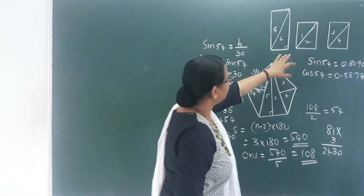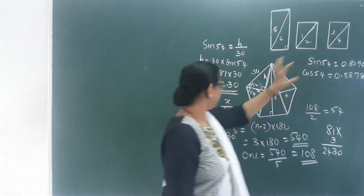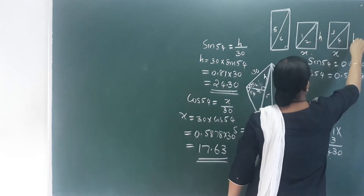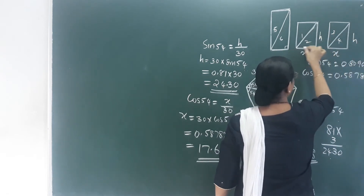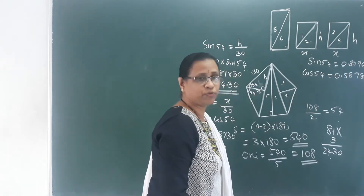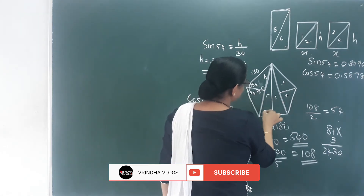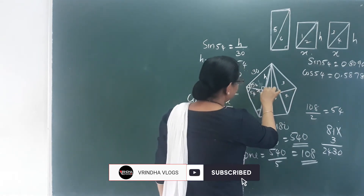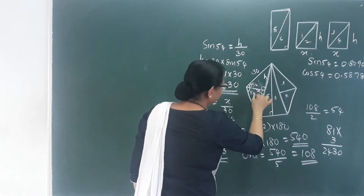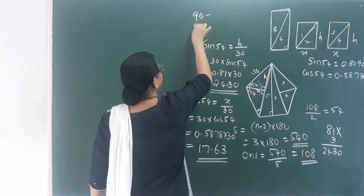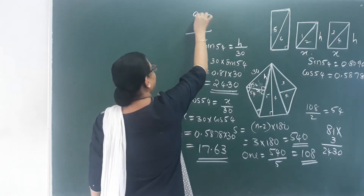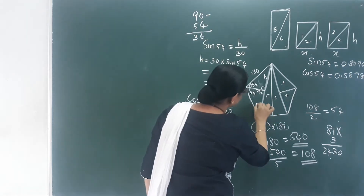So x is approximately 17.63. That gives us the length and breadth of the first rectangle. For the second rectangle, the angle at the pentagon corner is 108 degrees; this side is 72 degrees because the total is 108. The perpendicular bisects the 30 cm side, giving 15 cm. The remaining angle is 90 minus 54 equals 36 degrees.